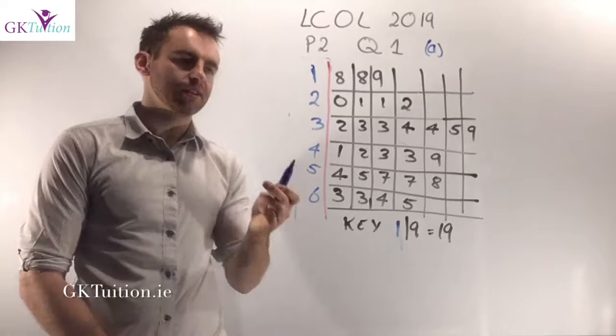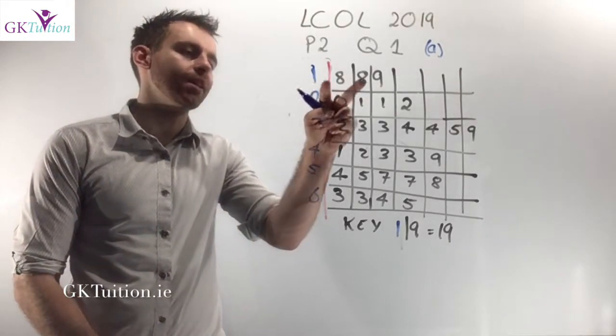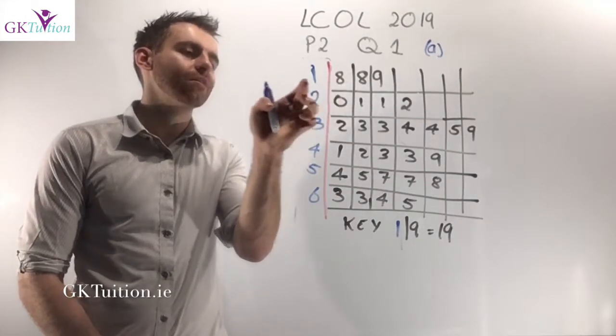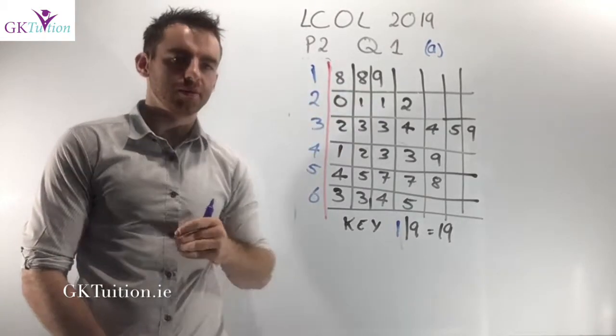So for example 1 and then 9 that's 19. The three youngest employees in this workplace were 18, 18 and 19. So therefore if I've got 1, 8, 1, 8 and 1, 9 that refers to the 18 year olds and 19 year olds.